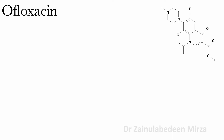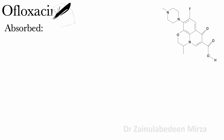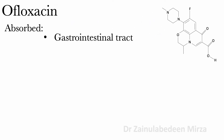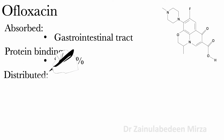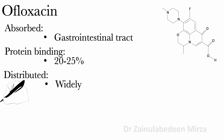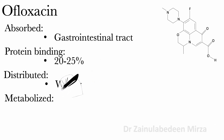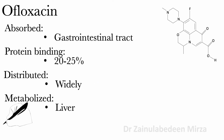Ofloxacin is rapidly and well absorbed from the gastrointestinal tract. Protein binding of Ofloxacin is about 20 to 25 percent. Ofloxacin is widely distributed and it is metabolized in the liver. Ofloxacin is excreted in urine.